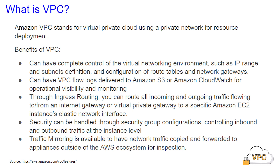Security can be handled through security group configurations, controlling inbound and outbound traffic at the instance level. Traffic mirroring is also available, allowing network traffic to be copied and forwarded to an appliance outside of the AWS ecosystem for inspection.